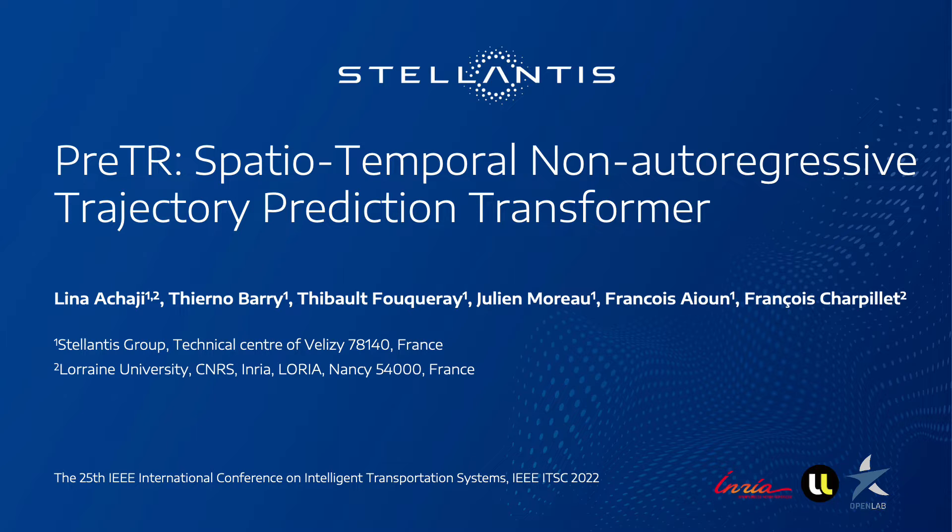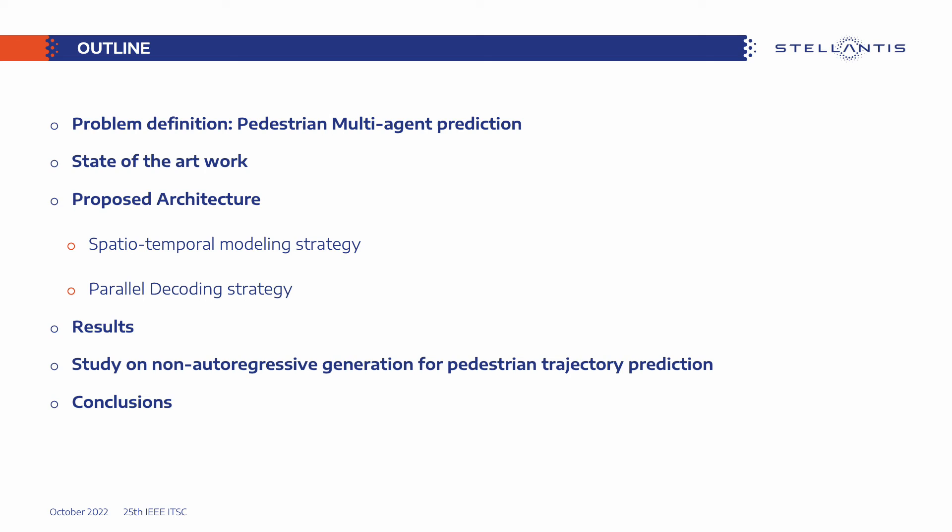This work was done with my colleagues Thierno Barri, Thibaut Foucray, Julien Moreau, François Ayoun, and François Chagbier. We will first define the pedestrian trajectory prediction problem, then have a look at the state-of-the-art work in this field. Later, we will go through the proposed architecture and results, and finally present our study on the non-autoregressive trajectory prediction problem.